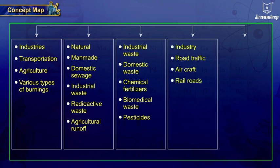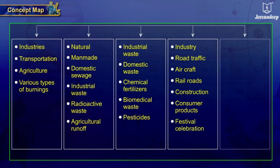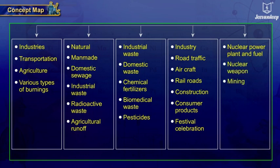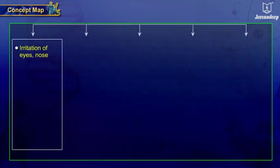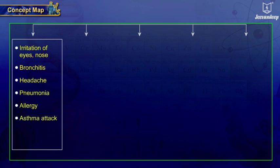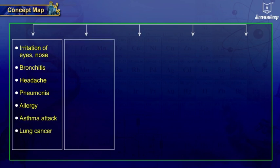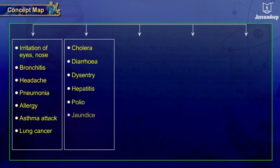Noise pollution can be caused by industry, road traffic, aircraft, railroads, construction, consumer products, and festival celebrations. Radioactive pollution can be caused by nuclear power plants, nuclear fuel, nuclear weapons, mining, nuclear accidents, and medical waste. Effects of air pollution include irritation of eyes and nose, bronchitis, headache, pneumonia, allergy, asthma attacks, and lung cancer. The effects of water pollution include cholera, diarrhea, dysentery, hepatitis, polio, and jaundice.